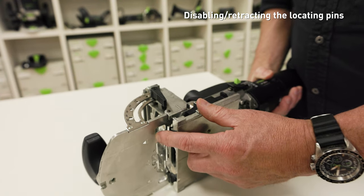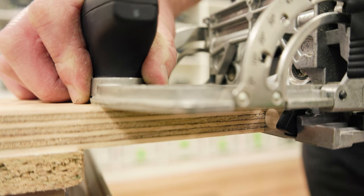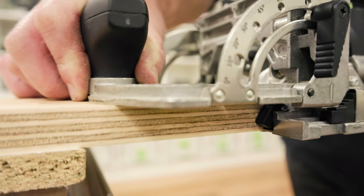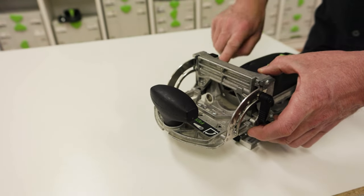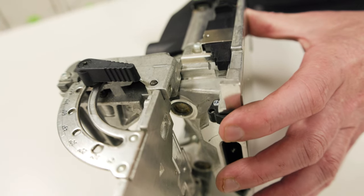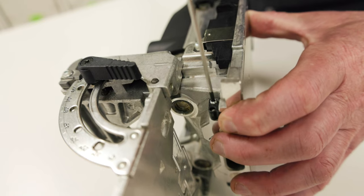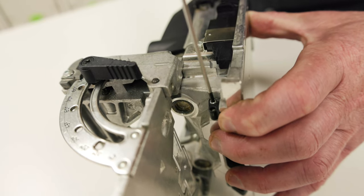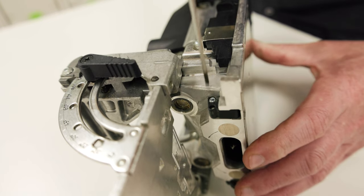The edge stops can be locked in their retracted position, so they don't push the fence away from the workpiece when not being used. To retract the stops, raise the fence to expose the stop limit position screw. Press the stop into its retracted position and gently tighten the screw using a 2mm hex key. Take care to avoid over tightening the set screws any more than necessary to keep the stop retracted.